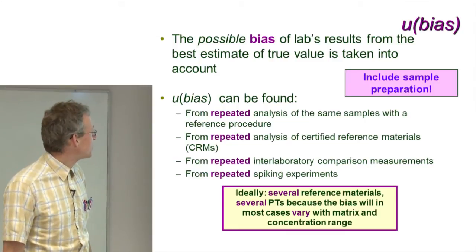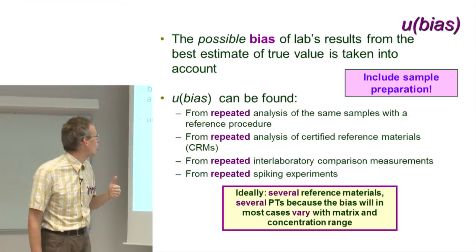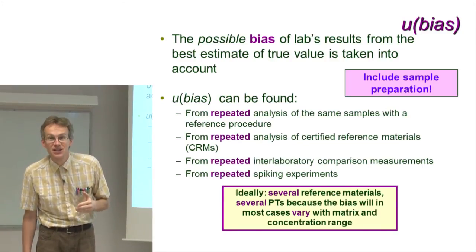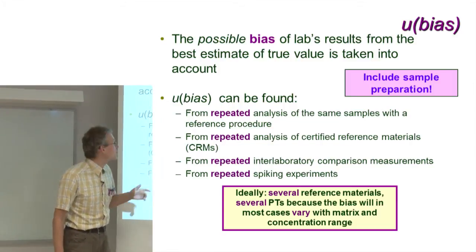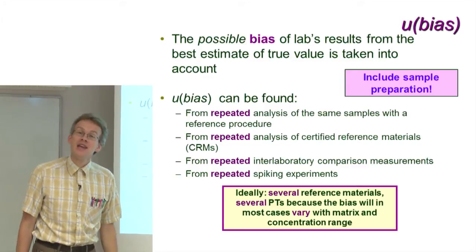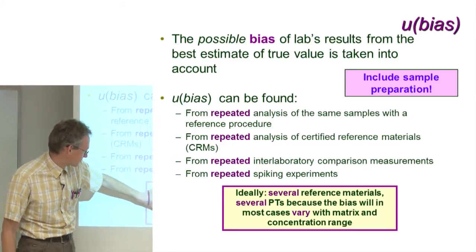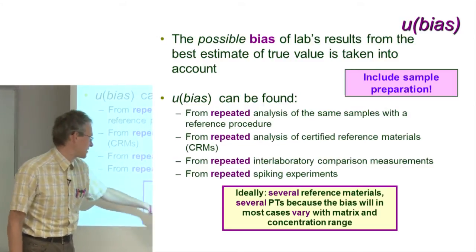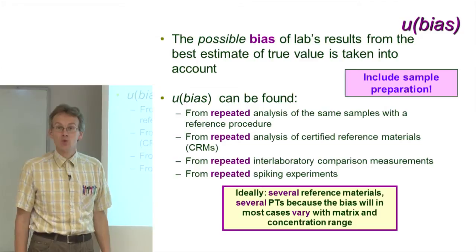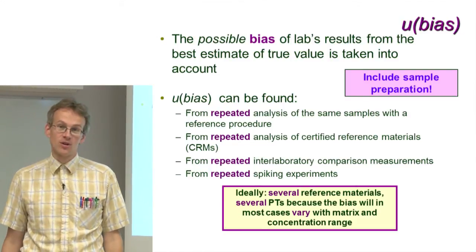Let me draw your attention to the word 'repeated.' Repetition is very important in bias determination, simply because otherwise your bias estimate will contain a fair share of random effects. Therefore, always for determining bias you have to carry out several repeated determinations. Furthermore, bias can change from matrix to matrix and also be dependent on concentration level. Therefore, ideally you should use several different reference materials or proficiency test results to estimate your bias, so that you get some kind of average bias and avoid it being grossly underestimated or overestimated.